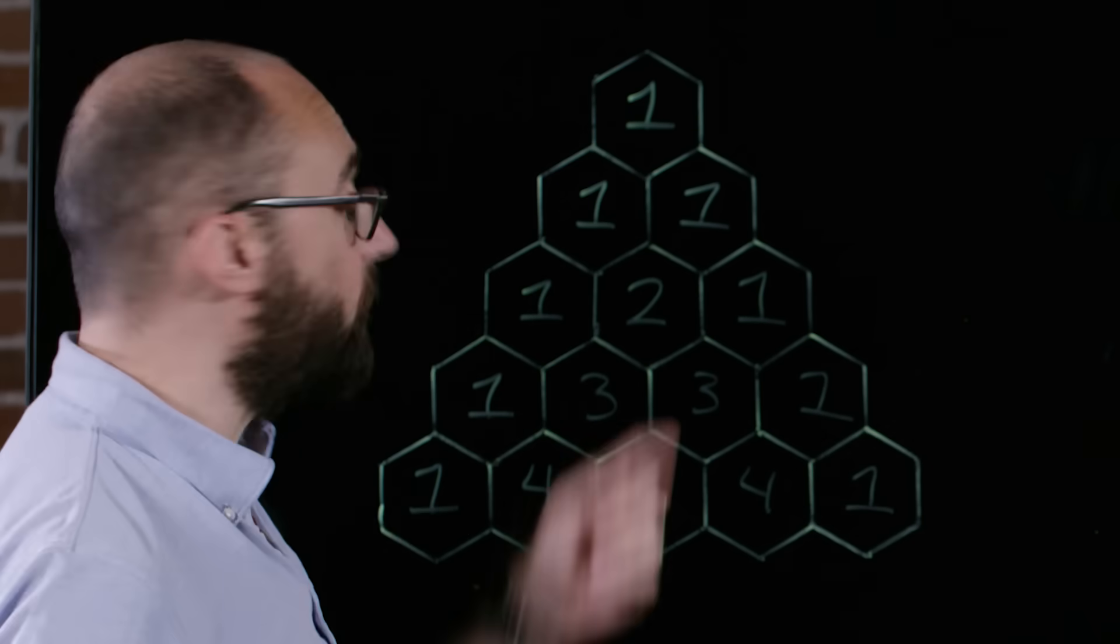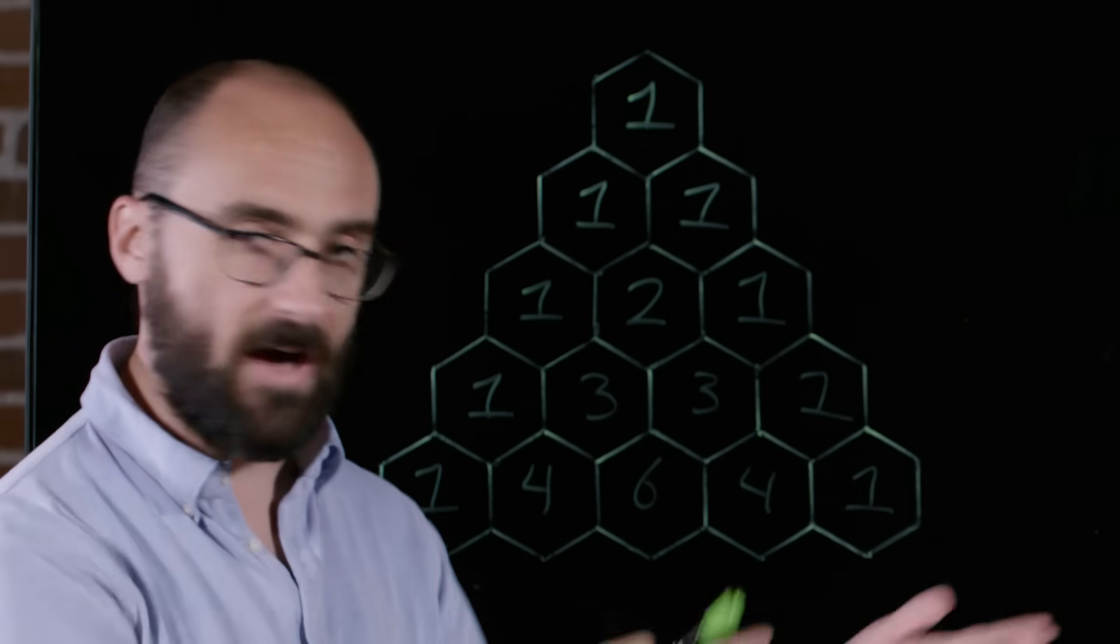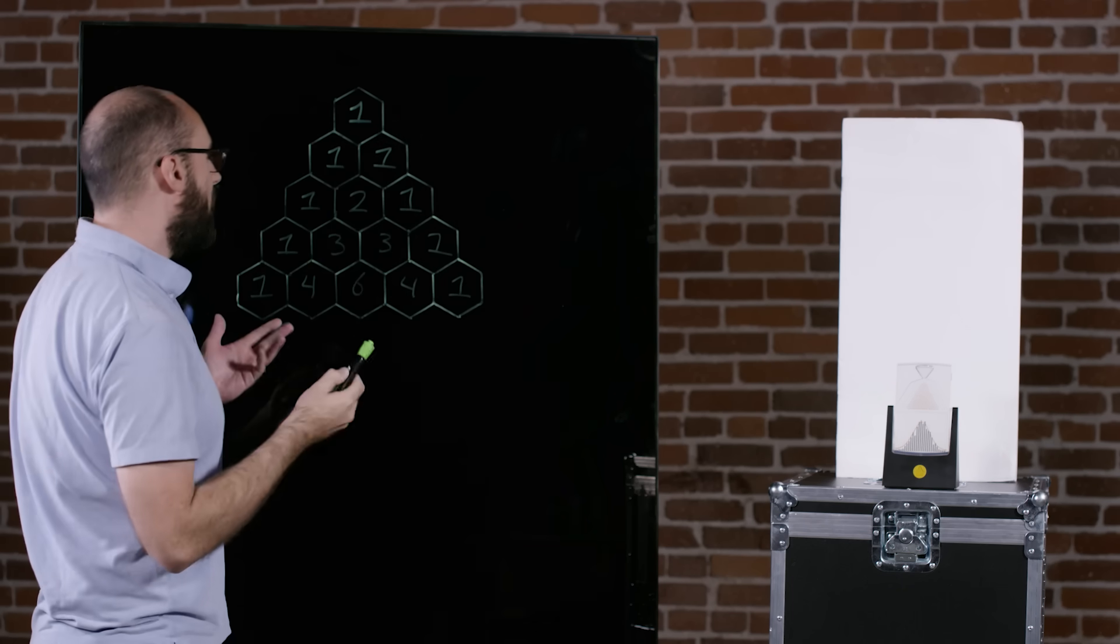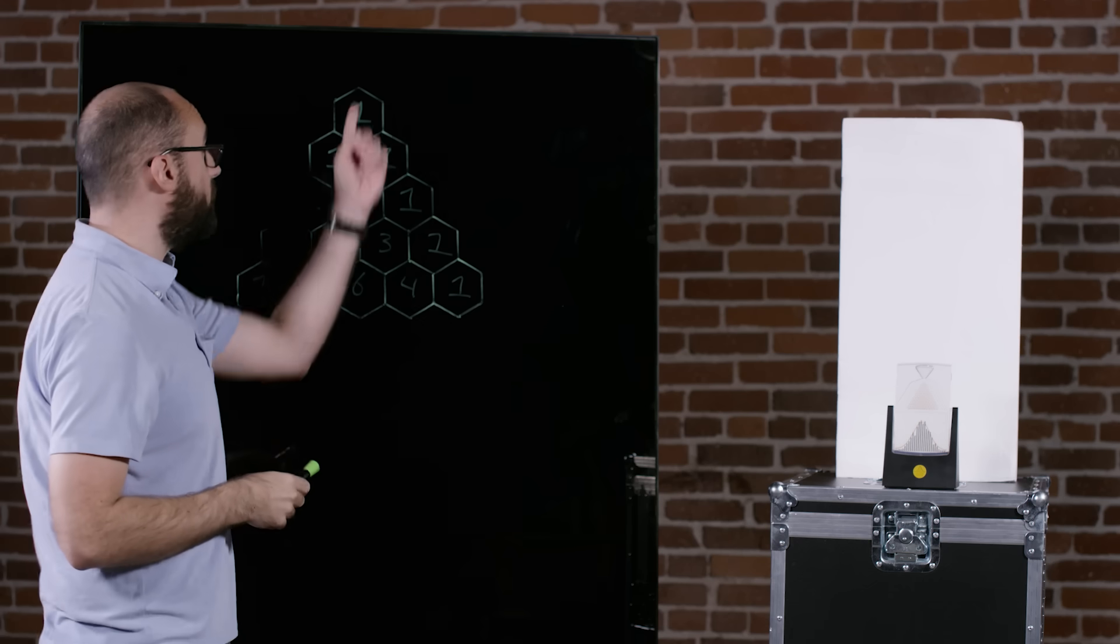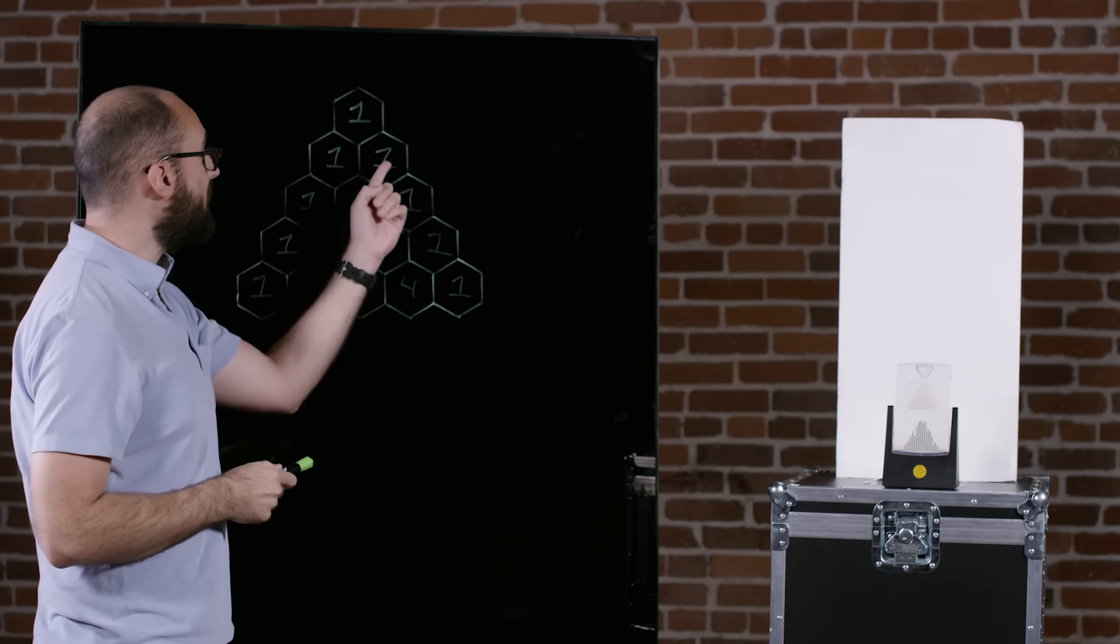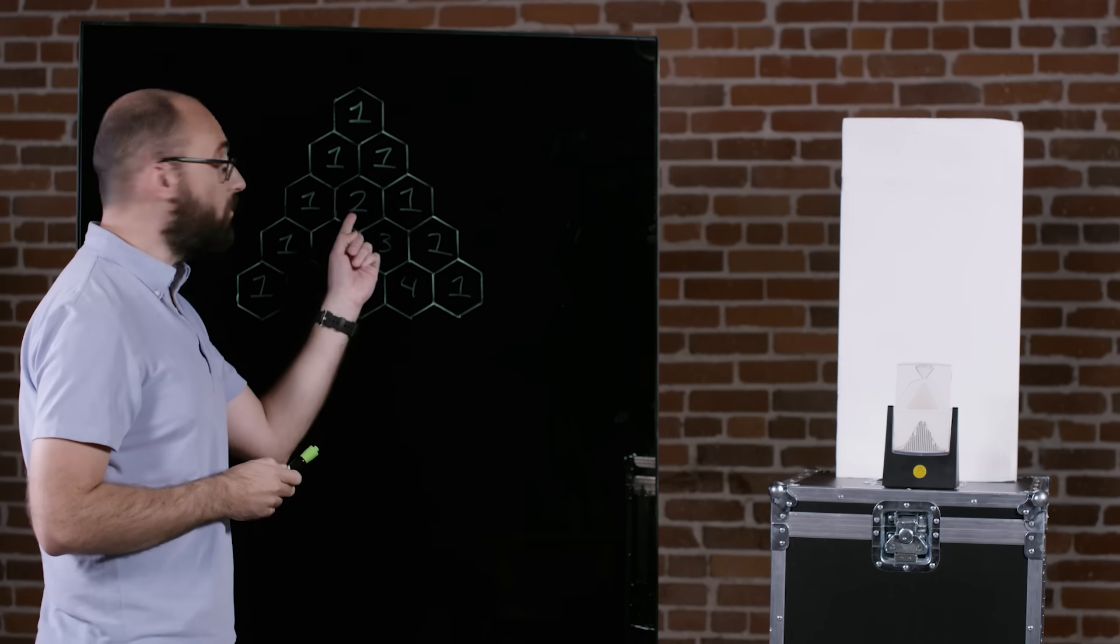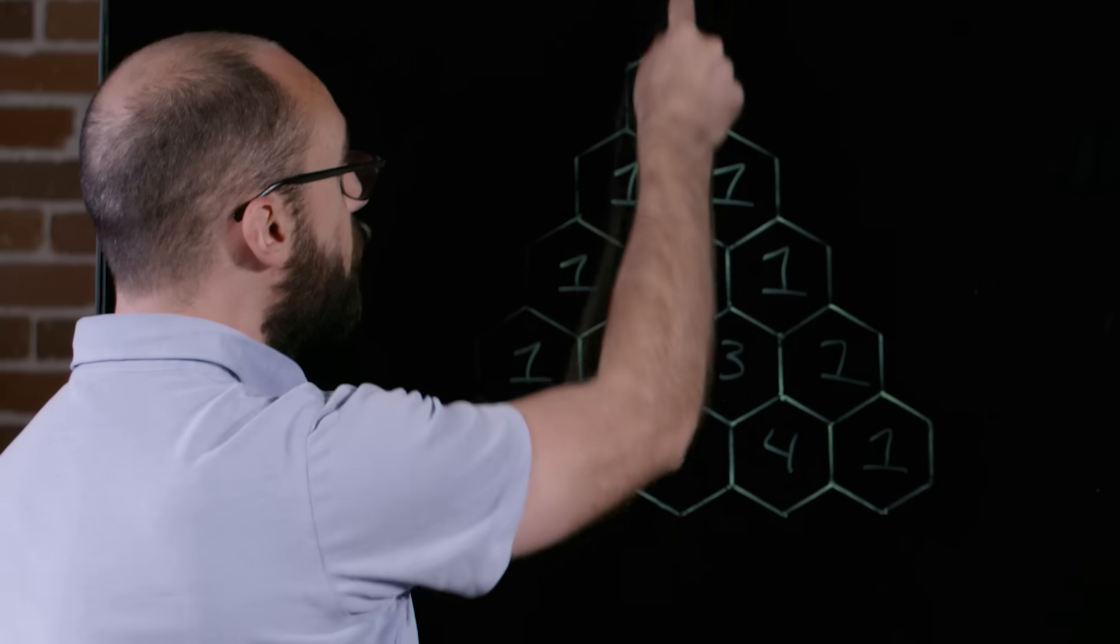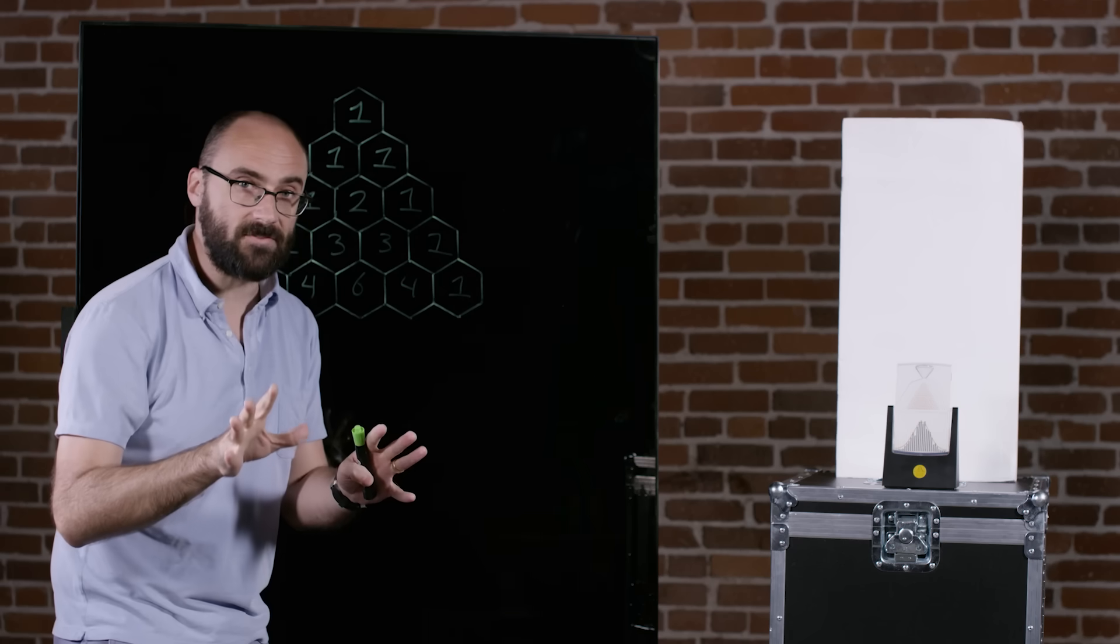So when it comes to hitting the first peg, there's only one way to hit that first peg. You fall out of the hopper. But once you've done that, you either can go left or right. Well, to hit this peg in the second row, there's only one way to do it. You have to have gone left when you hit the first peg. Same here, except you had to have gone right. But when it comes to this peg, that I've numbered 2, there are two paths that can take you there. You can either go left and then right or you can go right and then left. Two paths.